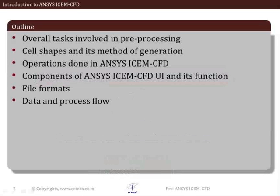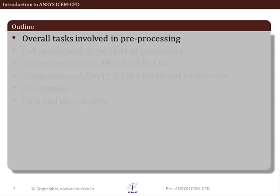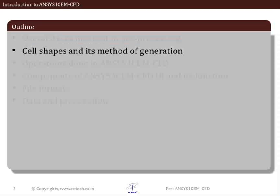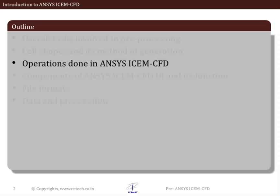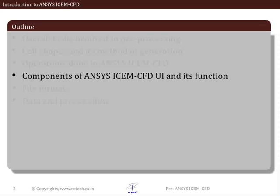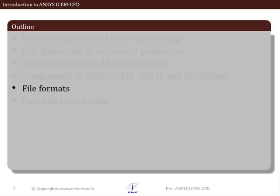This is the outline of our discussion today. First, we will look at the overall tasks involved in preprocessing. Then we will look at various cell shapes supported by standard CFD solvers like ANSYS Fluent or ANSYS CFX. We will also look at various grid generation methods. Later in the lecture, we will discuss various operations done in ICEM-CFD, different components of the UI and their functions, various files associated with ICEM-CFD and their data content. Work and data flow in ICEM-CFD depends on the meshing strategy selected. At the end of the lecture, we will discuss general as well as specific workflows in a typical meshing requirement.